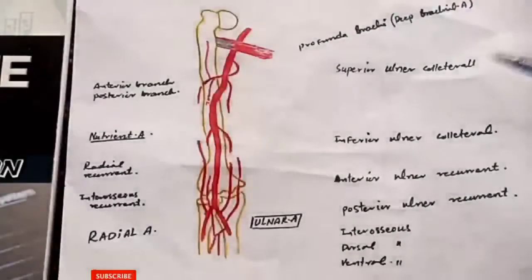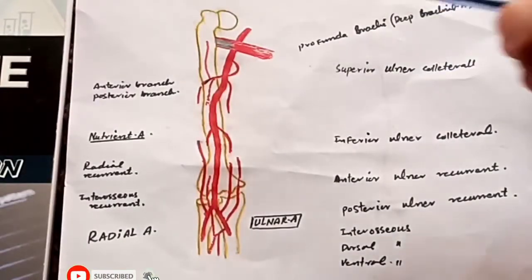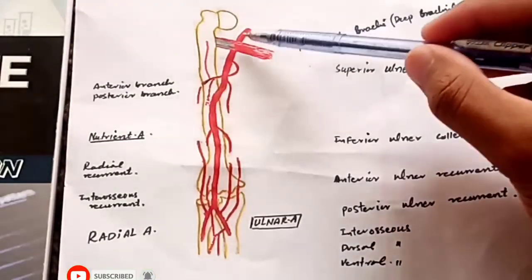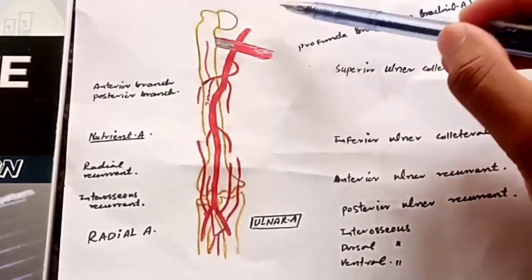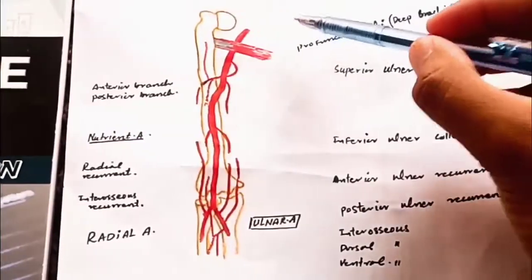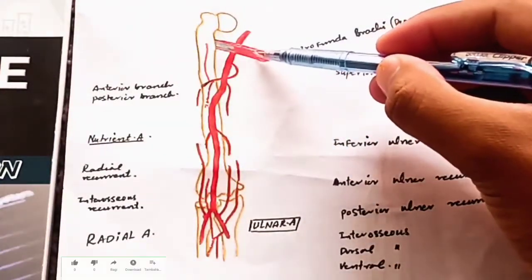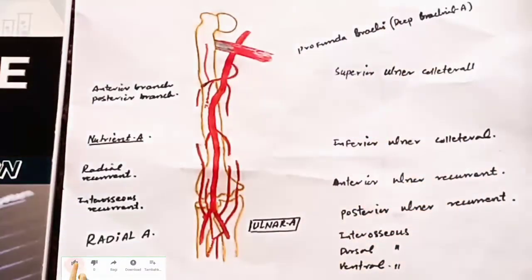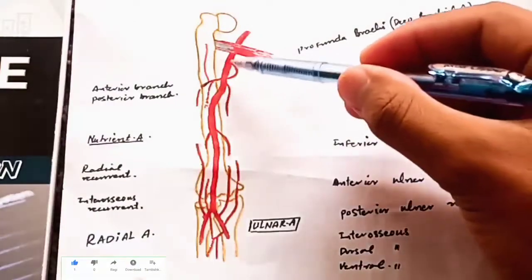Assalamu alaikum friends. Today I'm going to talk about the brachial artery. The brachial artery is actually the continuation of the axillary artery, and the axillary artery is the continuation of the subclavian artery. Just at the inferior border of the teres major muscle, the axillary artery continues as the brachial artery.